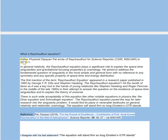Here is something someone has written that I got from the internet. In general relativity, the Raychaudhuri equation plays a significant role to explain the space-time singularities and gravitational focusing in cosmology. The first mention of the term 'Raychaudhuri equation' appeared in a research paper published in 1965. There is such wide acceptability of this equation, like other notable equations in physics like the Dirac equation and the Schrödinger equation. It will find its place in venerable textbooks on general relativity. The equation will stand firm so long as Einstein's general theory of relativity stands.